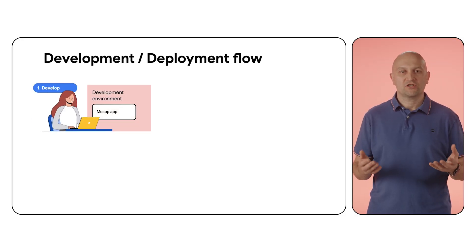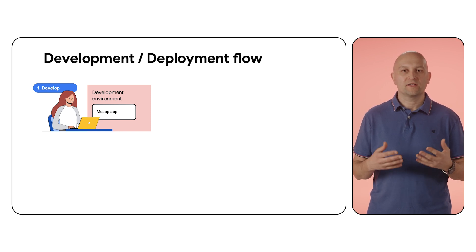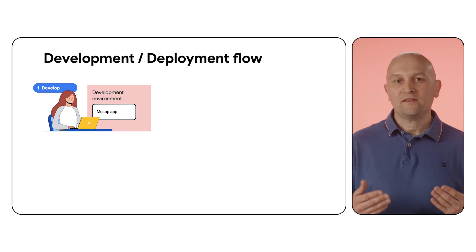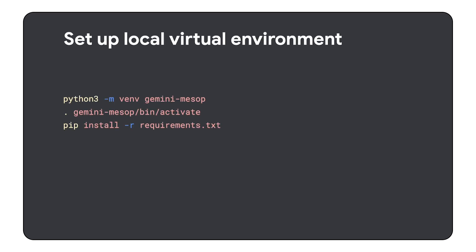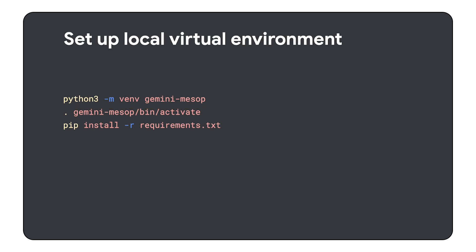So let's start on the local machine in your favorite IDE. First, you should clone the repository with the sample application — you will find the link in the description of this video. You might notice that the readme.md file includes all the instructions, but let me walk you through them now. You begin by setting up your local environment and installing all required packages. You can do that by running the following commands: the first one creates a new virtual environment, the second activates it, and finally pip is used to install all the dependencies from the requirements.txt file.